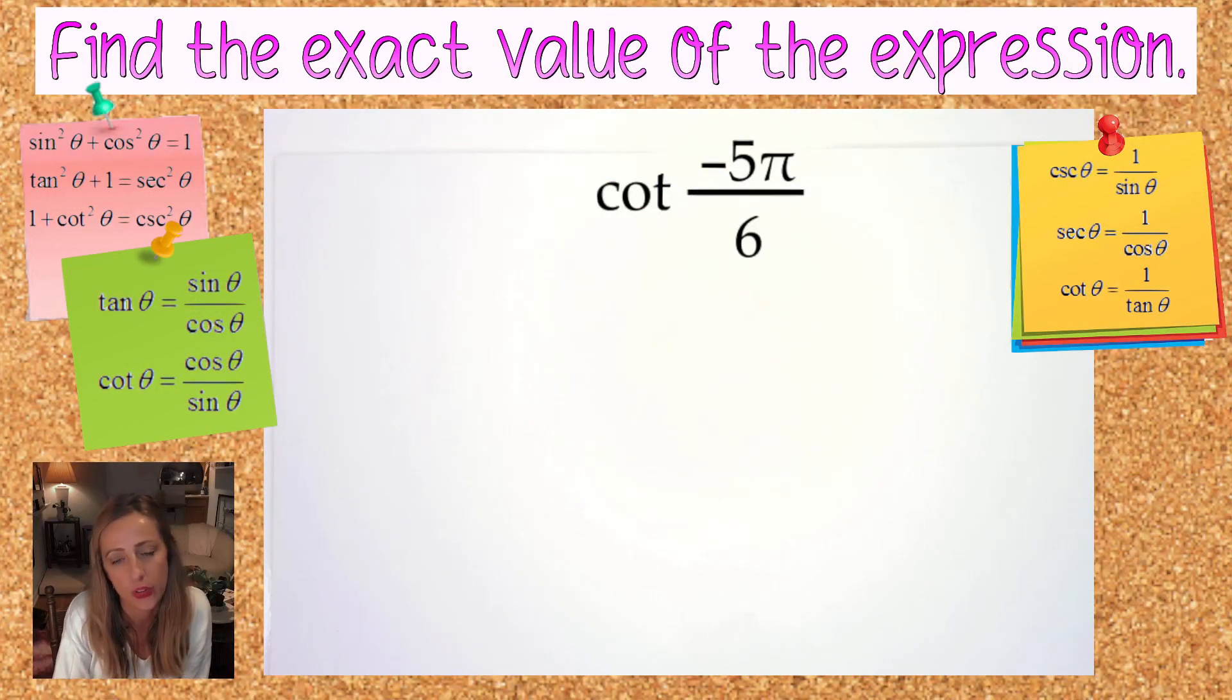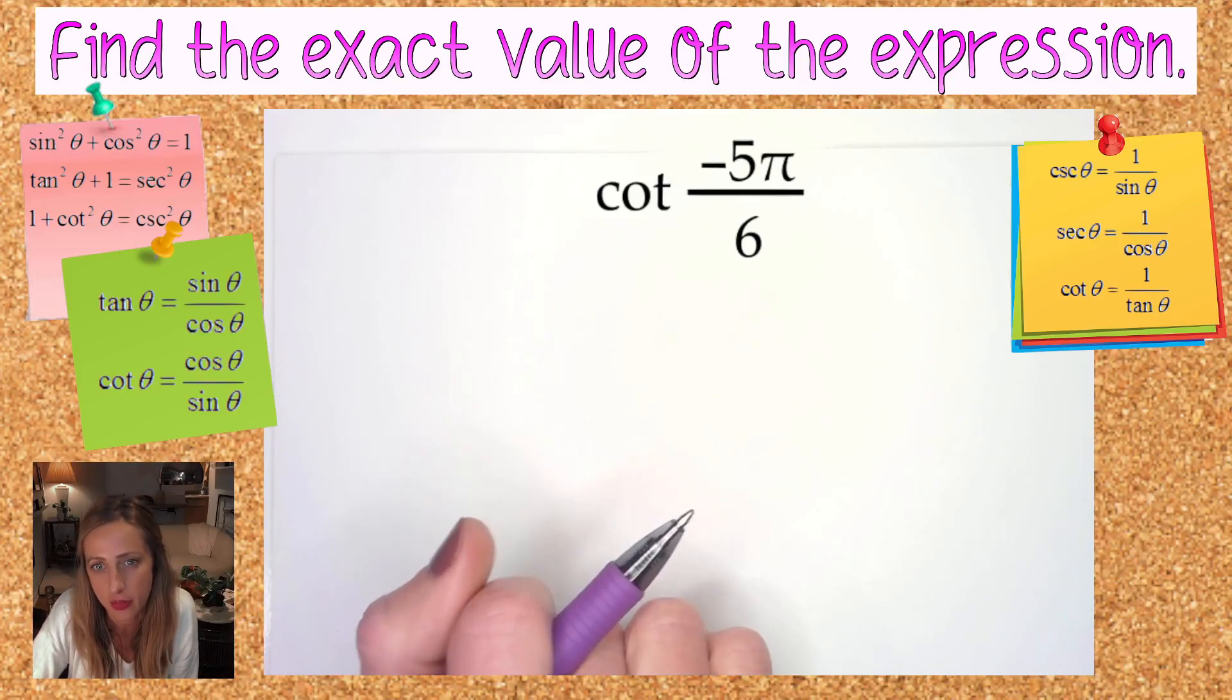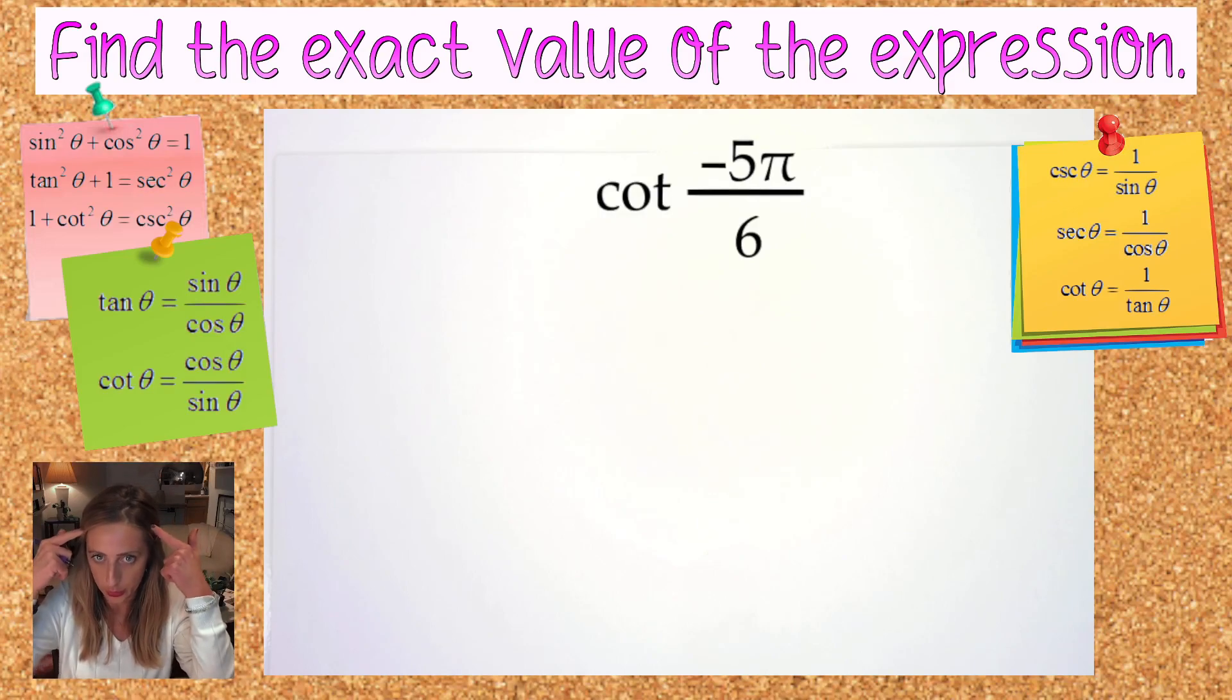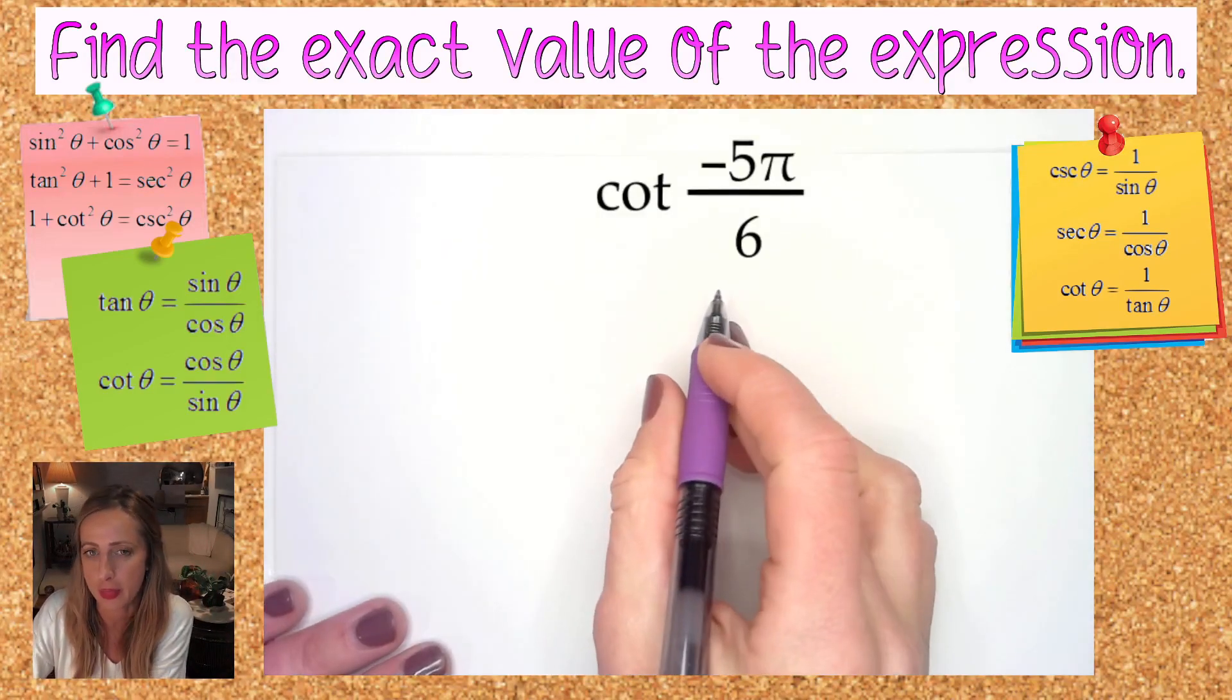Hey everyone, in this video we are finding the cotangent of negative 5π over 6. Since the directions are asking for an exact answer, that means no calculator, just use your brain. If you are in high school taking precalculus or in college, you're probably going to be expected to do this with just your brain, a pencil, and a piece of paper—not with any other additional resources. Alright, cotangent of negative 5π over 6.